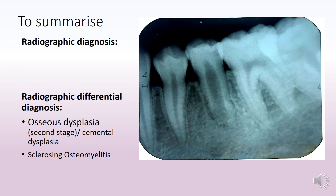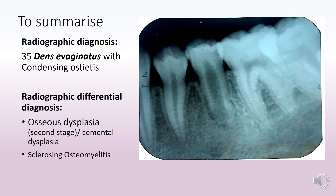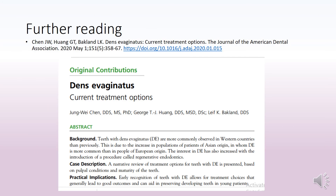To summarize, the radiographic diagnosis for this case is tooth 35 dense evaginatus with condensing osteitis. The differential diagnosis could include osseous dysplasia — generally in a mixed stage, also called cemental dysplasia or cementoosseous dysplasia — and sclerosing osteomyelitis. For further reading, I would recommend a recent article in the Journal of the American Dental Association that outlines current treatment options.